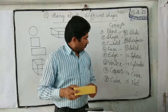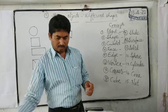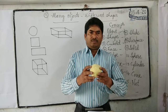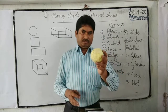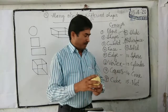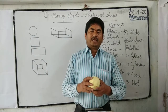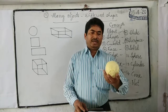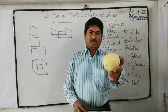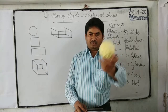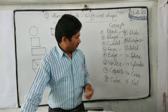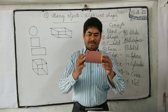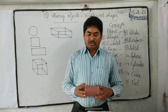Next, sphere. A perfectly round solid object is called a sphere. A sphere has neither edges nor vertices — only one curved surface area.